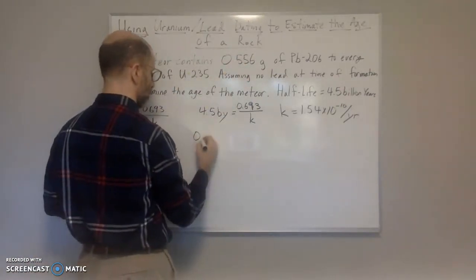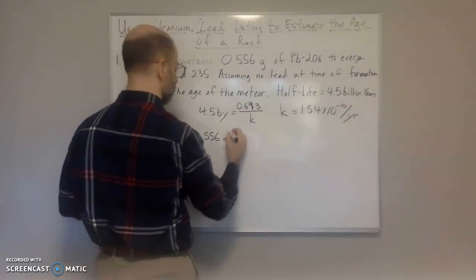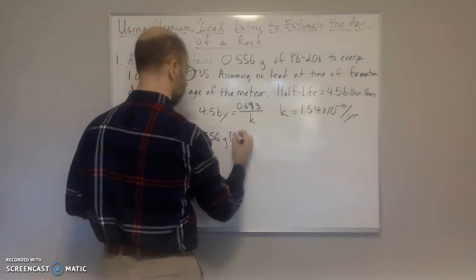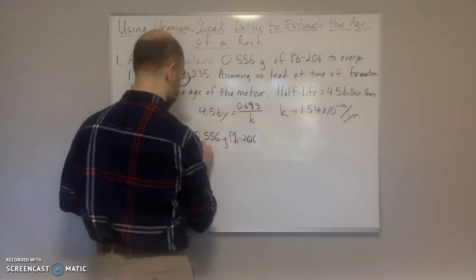That's where the assumption that all of the lead we got came originally from the initial amount of uranium. So we need to convert the grams of lead that we have back to uranium, and then add that amount to the amount we have left over, and that will give us the starting amount, supposedly.